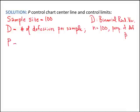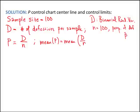We have another random variable, capital P, which is the proportion of defectives per sample — that's capital D divided by the sample size n. If we can find the mean and standard deviation of P, we can build our control chart just like for the individual or x-bar chart. The mean of P is the mean of D divided by constant n. Since D is binomial, the expected value of D is n times p-hat, so the mean of P simplifies to p-hat. So the center line of our p chart will be p-hat.